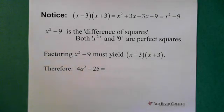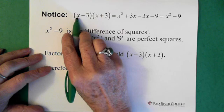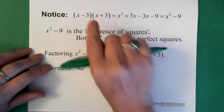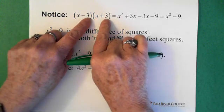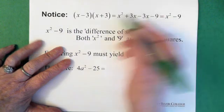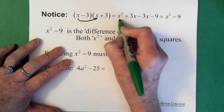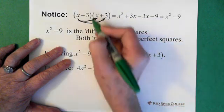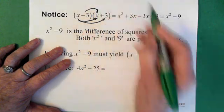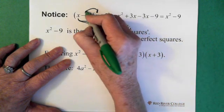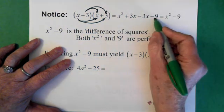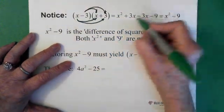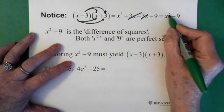If we have two terms, one of them is x minus 3 and the other one is x plus 3. Notice that they're the same — we have x's and we have 3's, so they're identical. If we multiply them together, x times x gives us x squared, x times positive 3 gives us plus 3x, minus 3 times x gives us minus 3x, and minus 3 times 3 gives us minus 9. The 3x and minus 3x cancel out, and we're left with x squared minus 9.